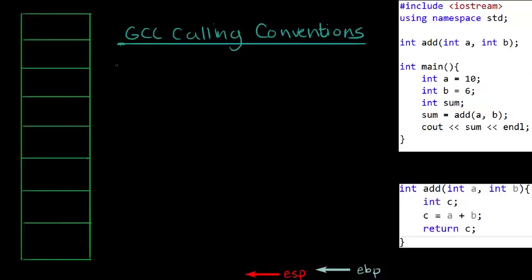In the GCC calling conventions there are two main characters: there's the caller — the person or function that's calling the function — and the callee — the function that is being called. In our example over here we have our main function, which calls the function add.